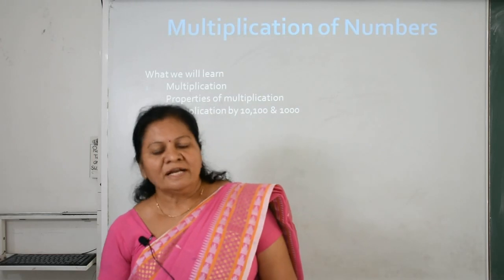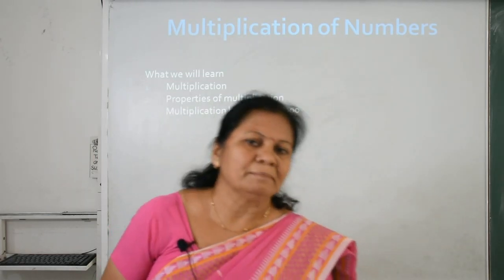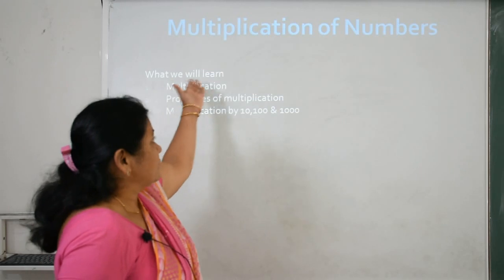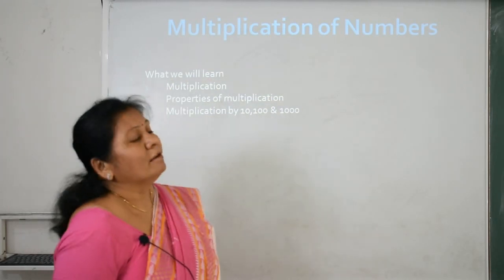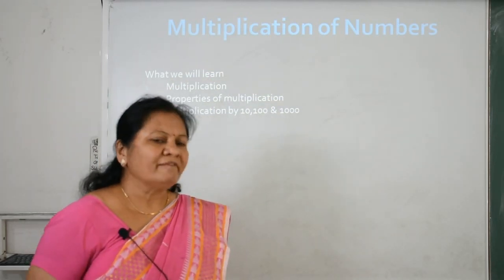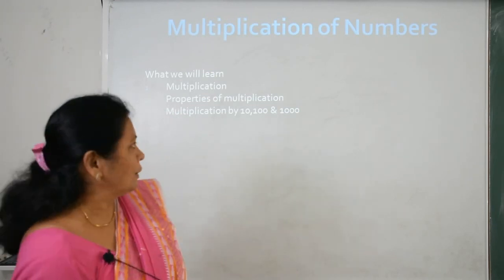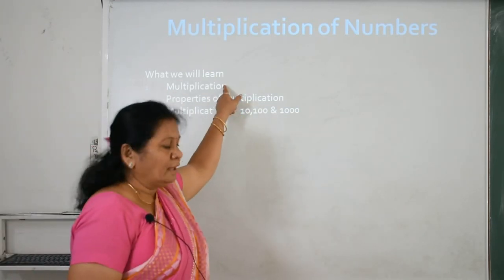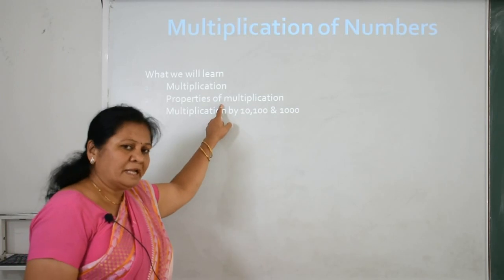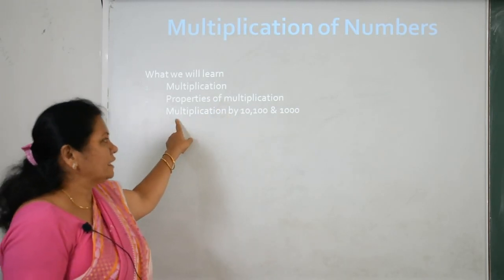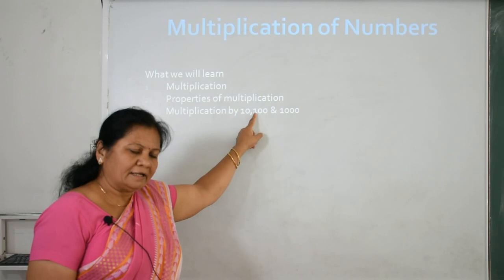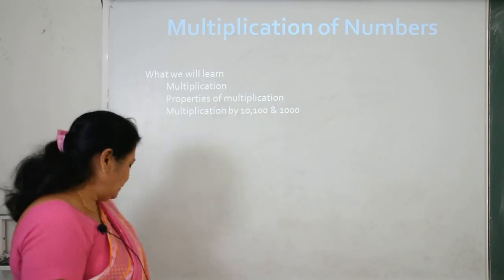Now let's see Chapter 3, Multiplication of Numbers. In this chapter, what will we learn? Today we will learn about multiplication, second — properties of multiplication, and third — multiplication by 10, 100 and 1000.